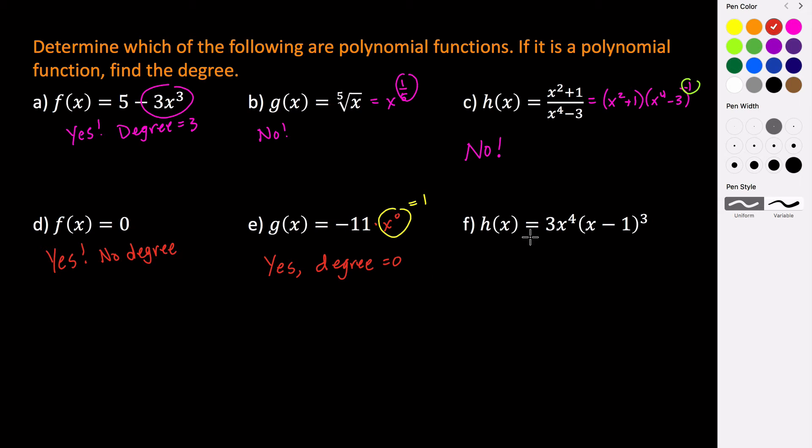And this last one, h of x, this is going to be a polynomial function. So this is a polynomial function. But what is its degree? So the degree for this one is a little different.